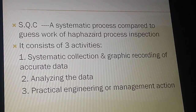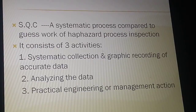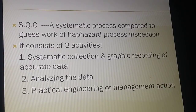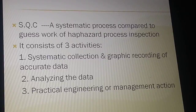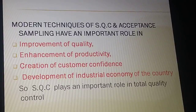Statistical quality control can also be described as a systematic process, as compared to a guesswork or haphazard process. It consists of three activities: first, systematic collection and graphic recording of accurate data; second, analyzing the data; and third, practical engineering or management action.